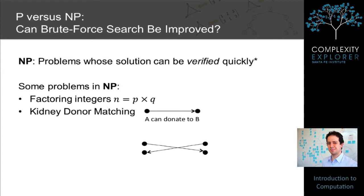NP is the class of problems whose solution can be verified quickly — again, in polynomial time. An example is the problem of factoring integers: given an integer n, find a factorization into two smaller integers p and q where n equals p times q. This is in NP because if I give you p and q, it's very easy to verify that their product is n. However, finding p and q given n is a notoriously difficult problem.